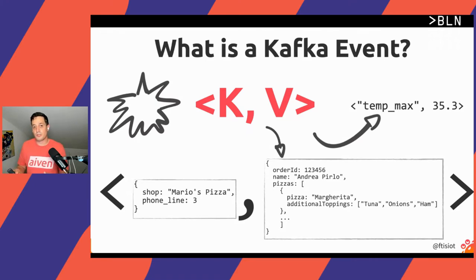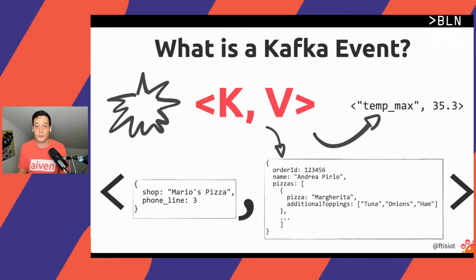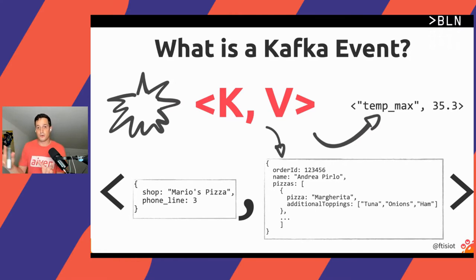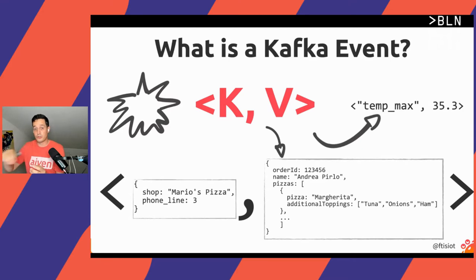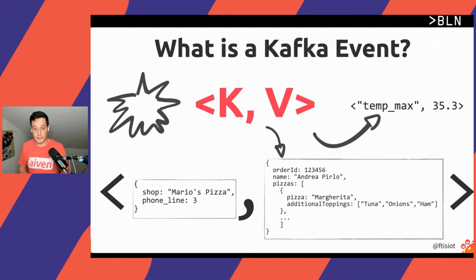If we want to send the same information in a more compacted way, we can use other data formats like Avro, which detaches the schema from the payload and uses a schema registry to compact the message. On the consumer side, we rehydrate the message itself when consuming the data.